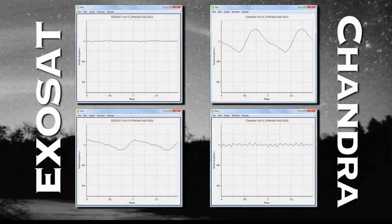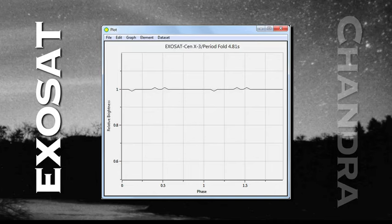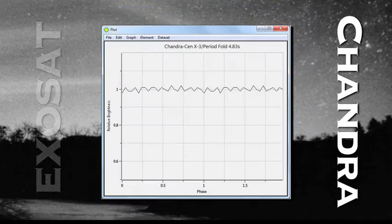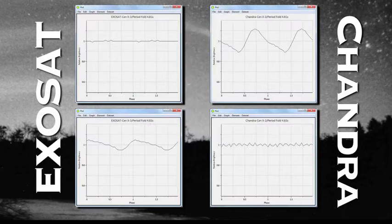And you can see that with a 4.81 second fold, the Exosat data is just flatter than a pancake. And with a 4.83 second fold, the Chandra curve shows no variability. The effect is real.